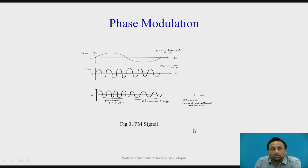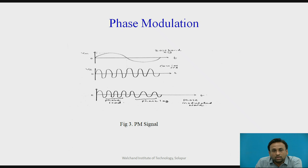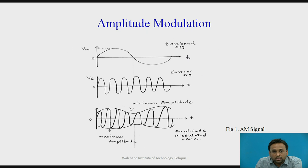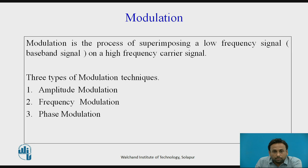Next is phase modulation, in which we change the phase of the carrier signal with respect to the modulating signal, while keeping amplitude and frequency constant. To summarize: in amplitude modulation we change the amplitude of the carrier, and in frequency modulation we change the frequency of the carrier — both with respect to the modulating signal.